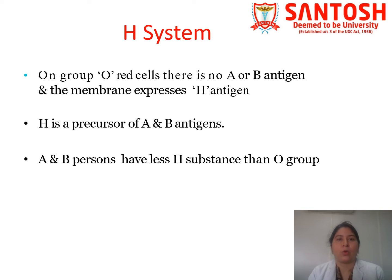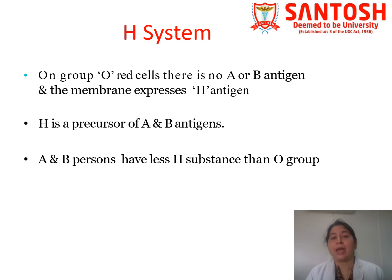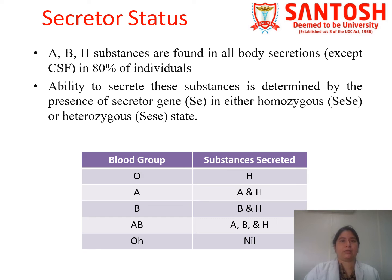On group O red cells there is no A antigen and no B antigen; however, the membrane still expresses H antigen. They do not have the specific sugar molecules which define them as A or B, but they still have the H substance. H is a precursor for both A and B antigens — without this H precursor, A and B antigens will not be expressed. Usually A and B persons have less H substance compared to group O.